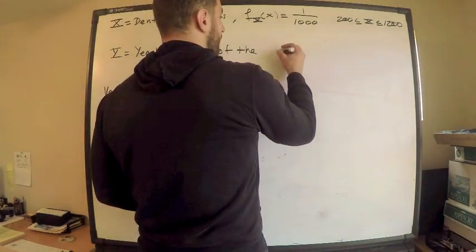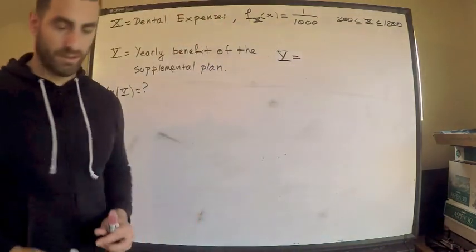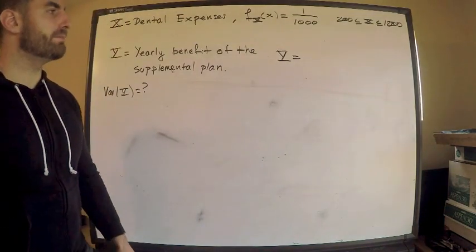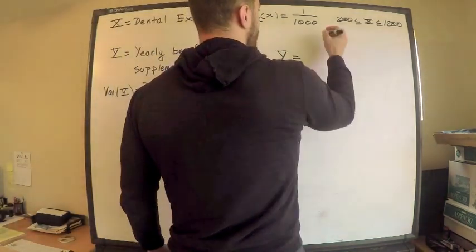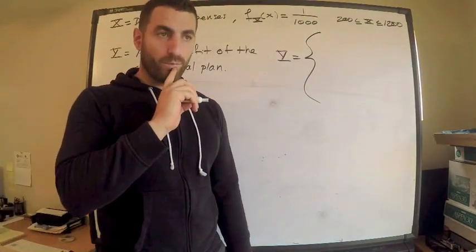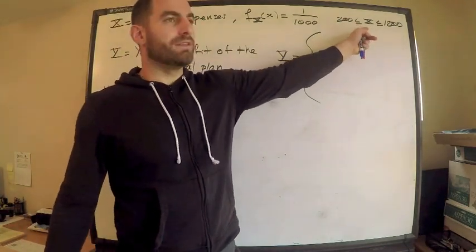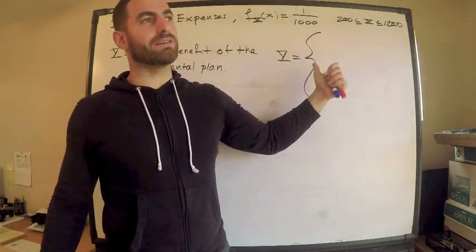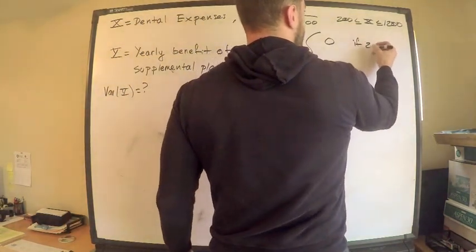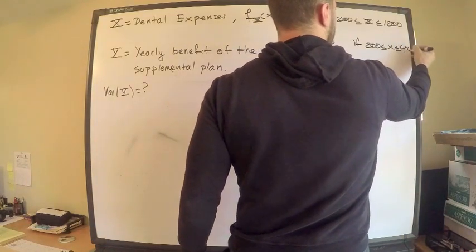This tells me that according to the scenario given, the supplemental plan, the benefit paid by that, is equal to, it's nothing when the dental expenses are between 200 and 400. All right, these are my dental expenses. The supplementary plan doesn't kick in until after 400. So again, it's zero if 200 is less than x is less than 400.